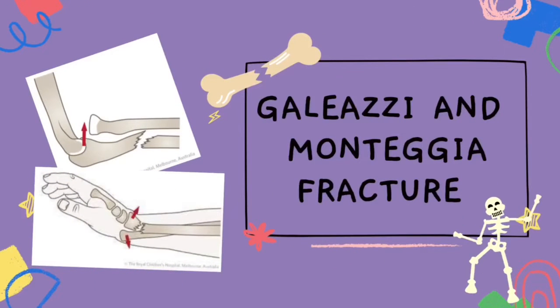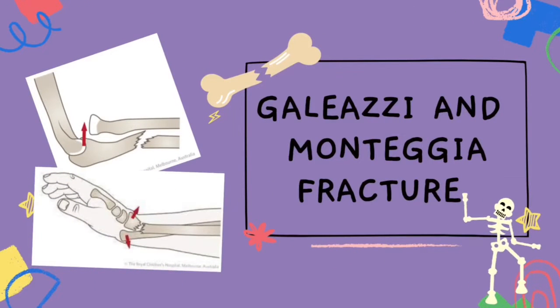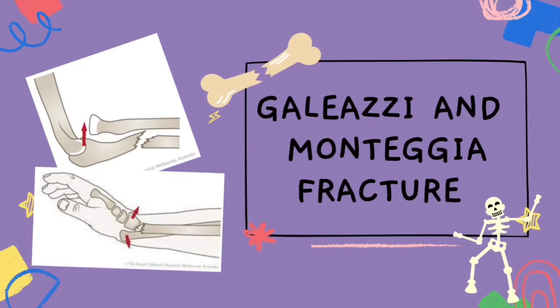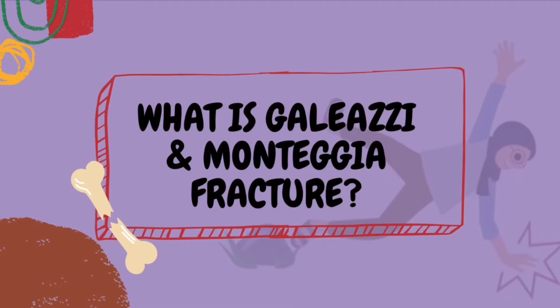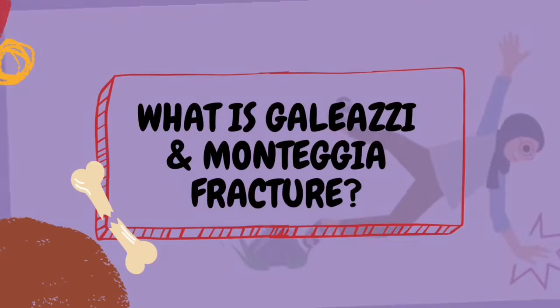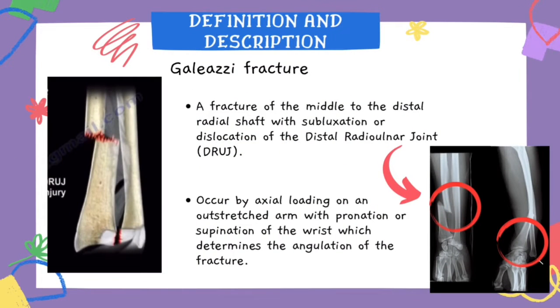Today we're going to talk about Galeazzi and Monteggia fracture. A Galeazzi fracture is defined as a fracture of the middle to the distal radial shaft with subluxation or dislocation of the distal radio-ulnar joint.